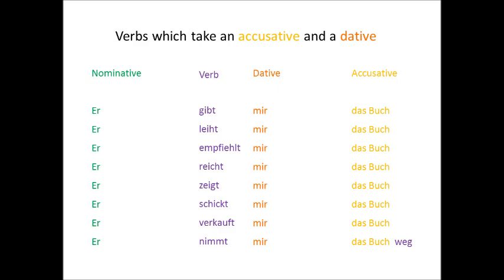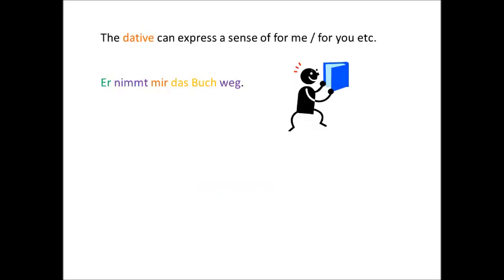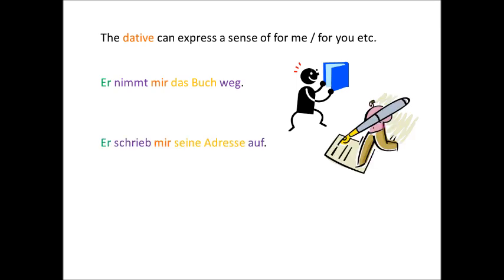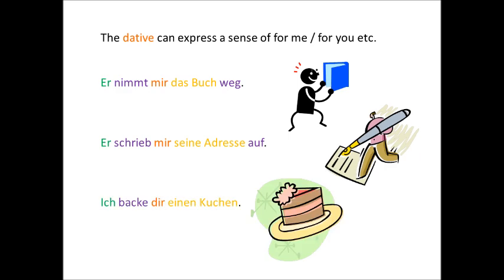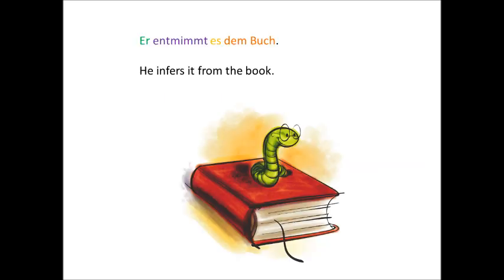Note that it's he takes the book away from me, not to me in English. In fact, the dative can generally be used to express a sense of for me, or for you, etc. For instance, er schrieb mir seine Adresse auf, meaning he wrote his address out for me. Or the sentence ich backe dir einen Kuchen, I'm baking you a cake. Just a word of warning though: the dative won't always be a person — sometimes it can be a thing as well. For instance, he infers that from the book: er entnimmt es dem Buch, where book is in the dative.